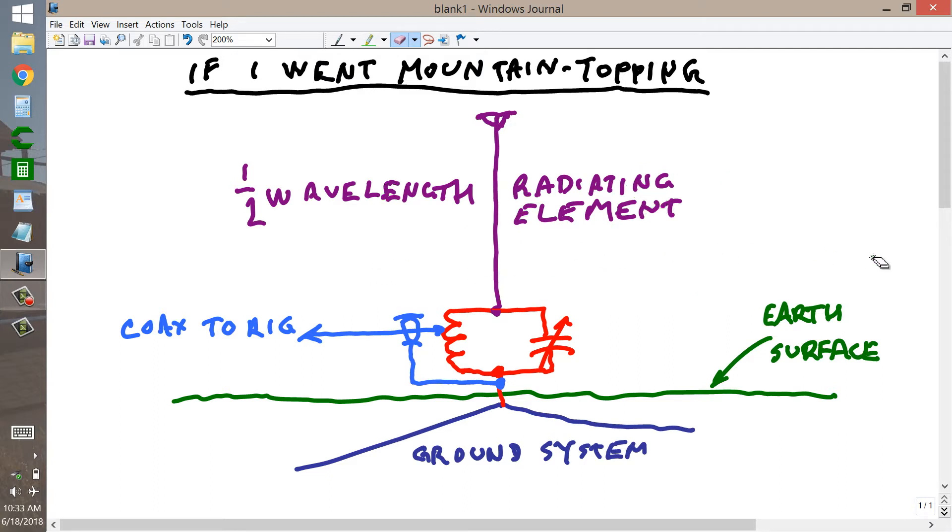What I'm showing you here is a basic schematic layout of the antenna system that I would use if I went mountaintopping on a band such as 20 meters, say, 14 MHz band. I would use a 1.5 wavelength radiator, electrical 1.5 wavelength radiator.